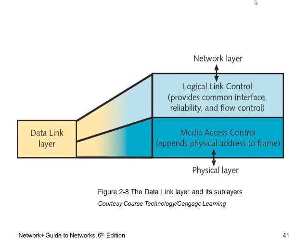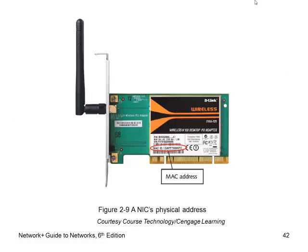So, the data link layer has our logical link control and media access control — two sub-layers. Here's a D-Link wireless card showing a MAC address — that's the physical address right there on the card.